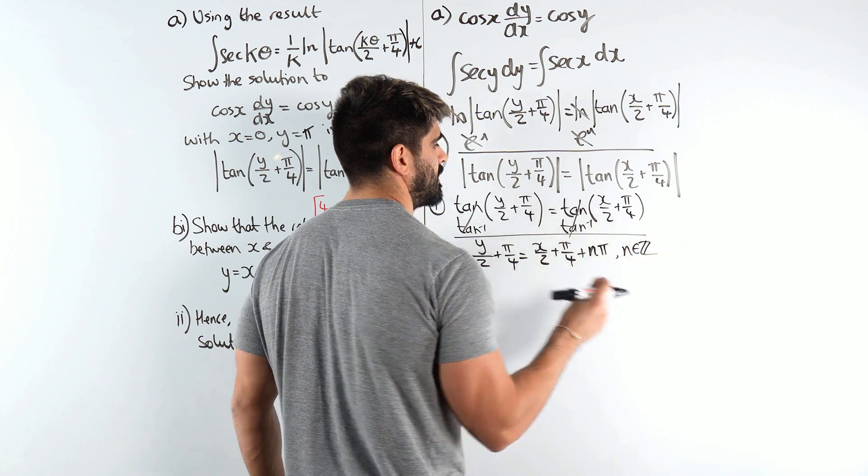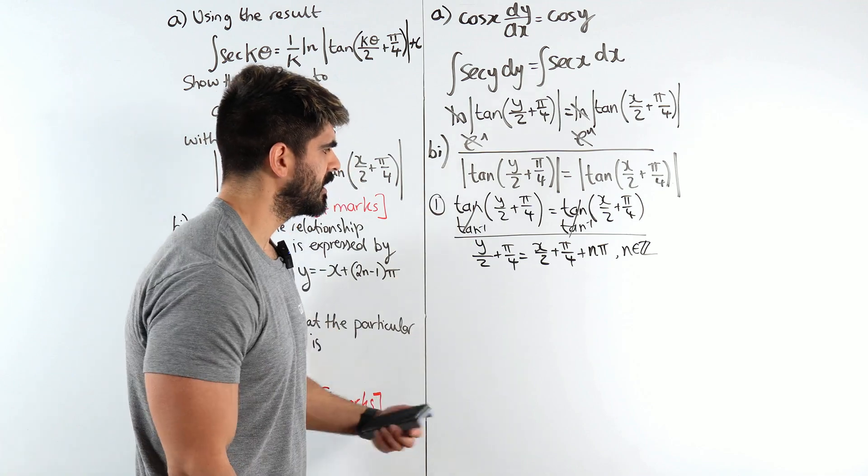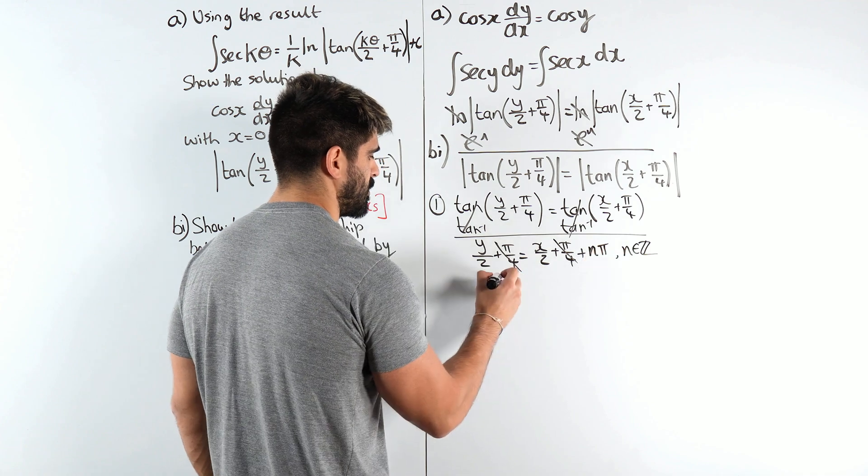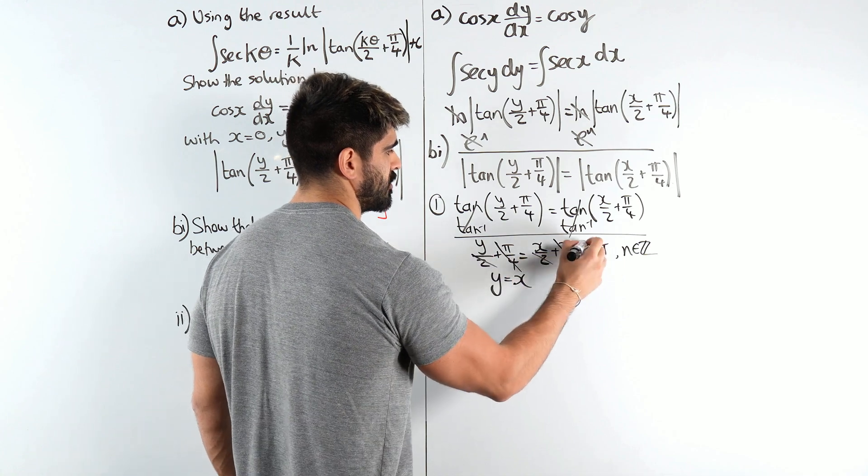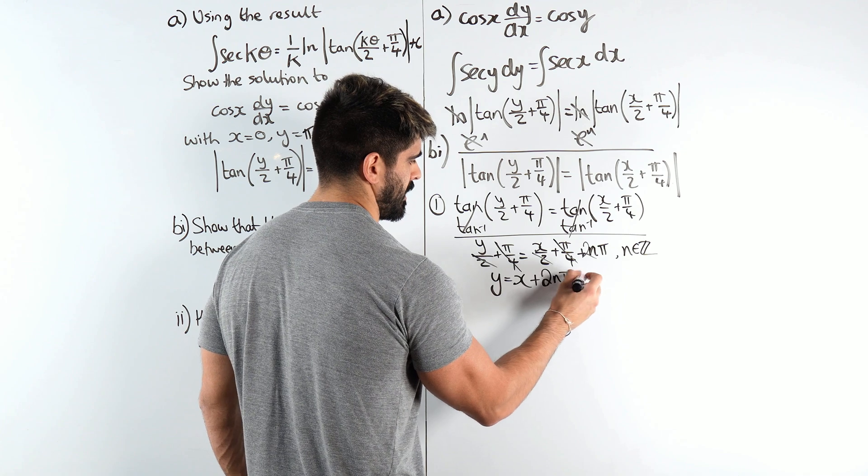Here I'm just going to say n pi where n is an integer, because you can go backwards as well. Now another thing that happens is the pi over 4s cancel. And we can times through by 2. Y is x. So timesing through by 2 that goes and we get our 2n pi.